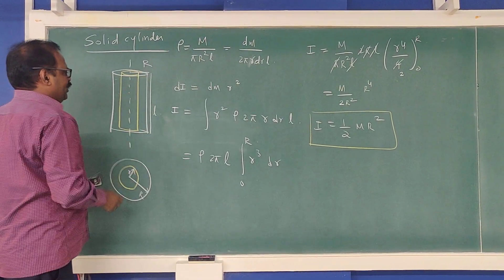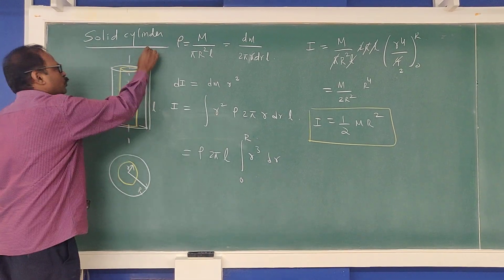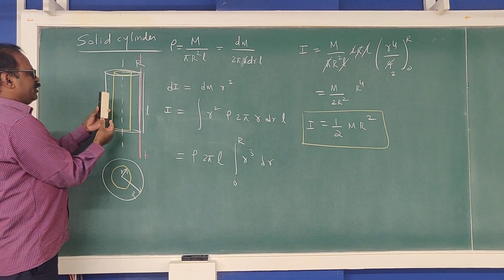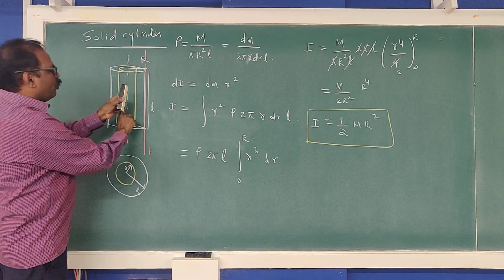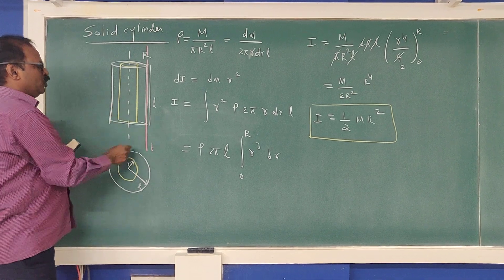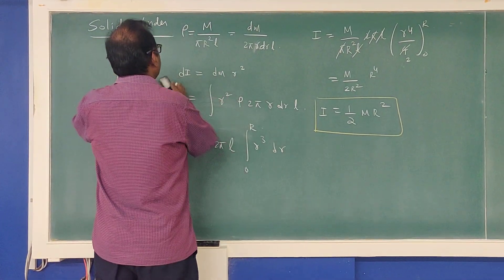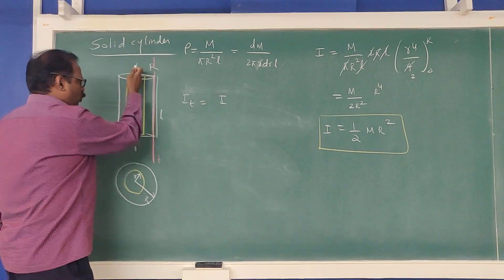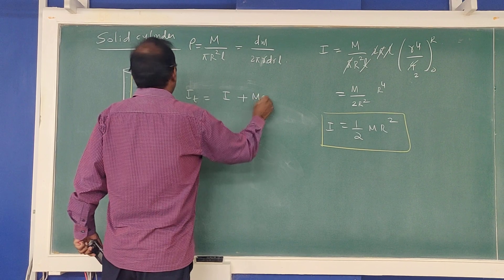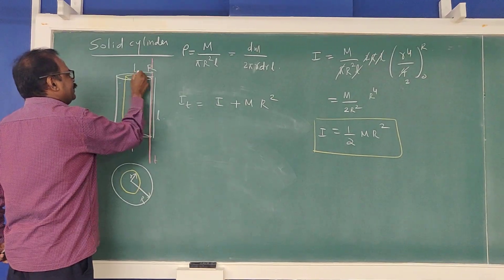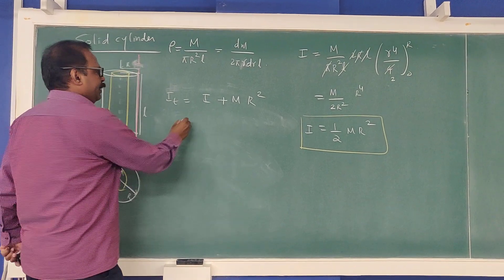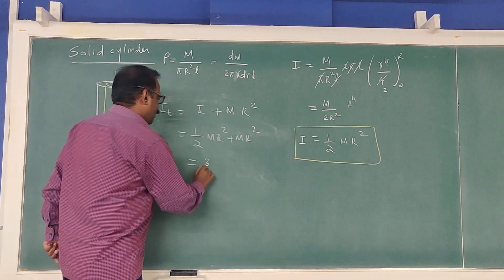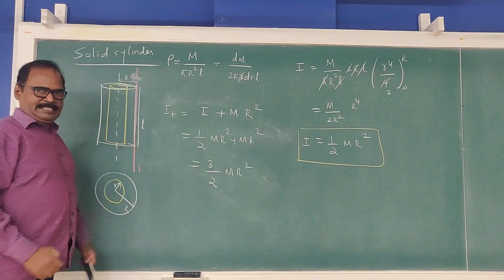For a solid sphere, the moment of inertia about a tangential axis can be found using the parallel axis theorem. The moment of inertia about the tangent equals the moment of inertia about the diameter plus mass times distance squared. The distance from the center to the tangent is R, so I_tangent = I_diameter + MR².